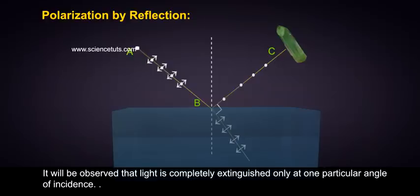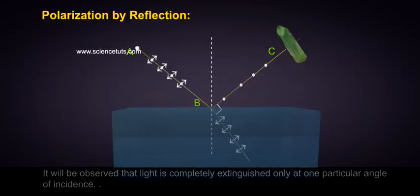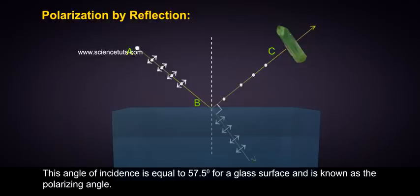It will be observed that light is completely extinguished only at one particular angle of incidence. This angle of incidence is equal to 57.5 degrees for a glass surface and is known as the polarizing angle.